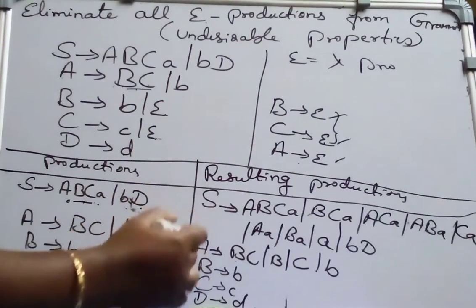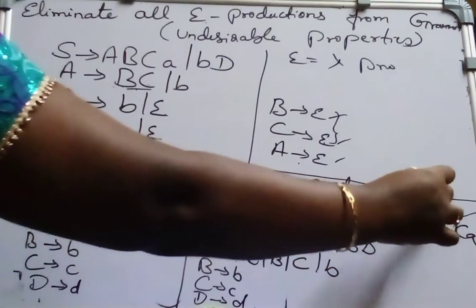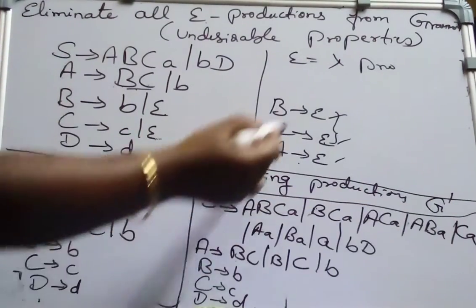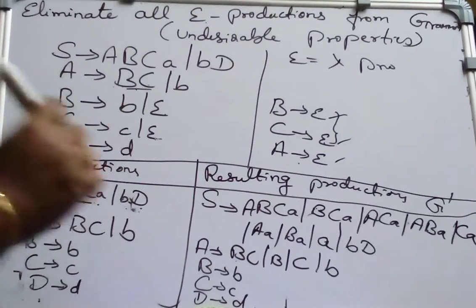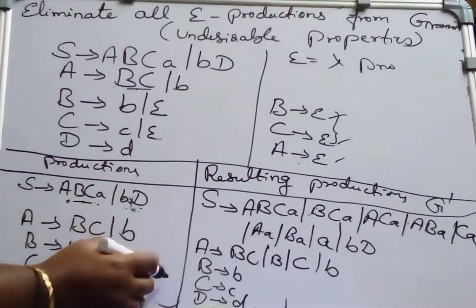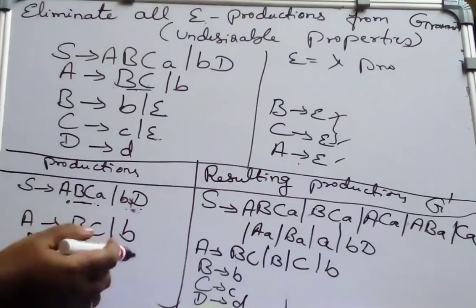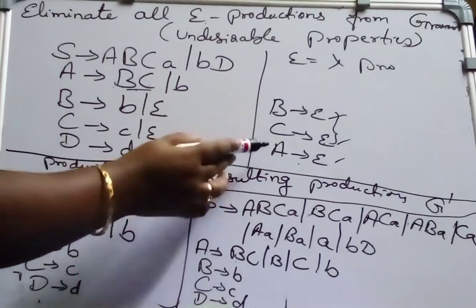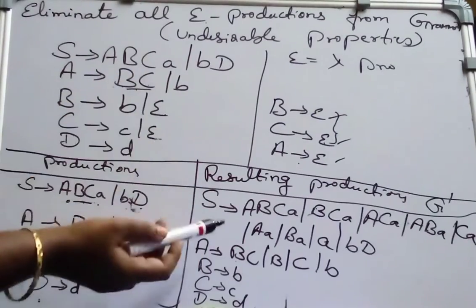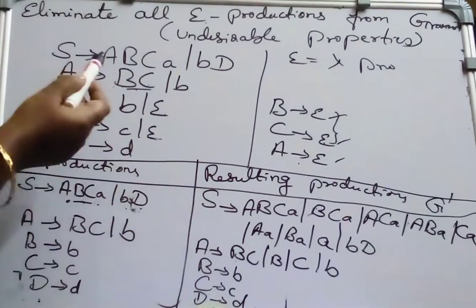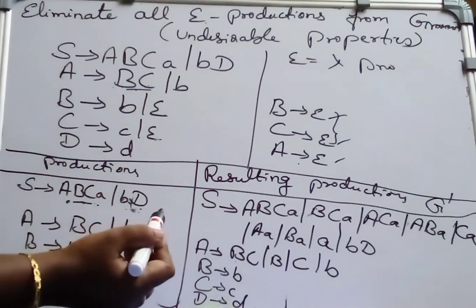So this is the final grammar G' we got after removing the epsilon productions. This is the new grammar after removing the epsilon productions. Hope you have understood how to remove epsilon productions, that is the undesirable property from the grammar. Before removing epsilon, we should write all possible productions and then eliminate. The number of productions has increased for S and A after substituting the epsilon. Thank you.